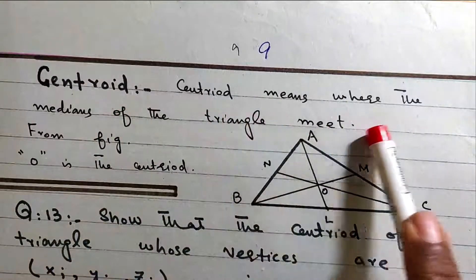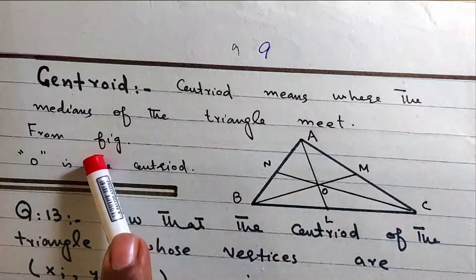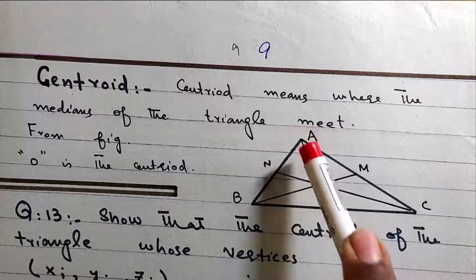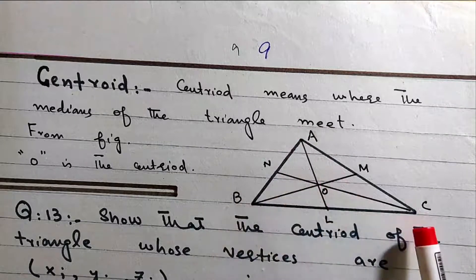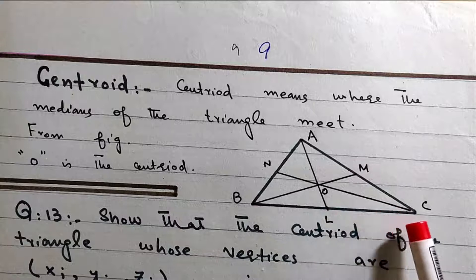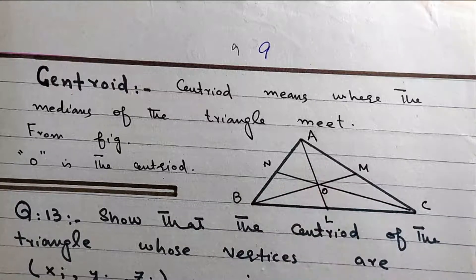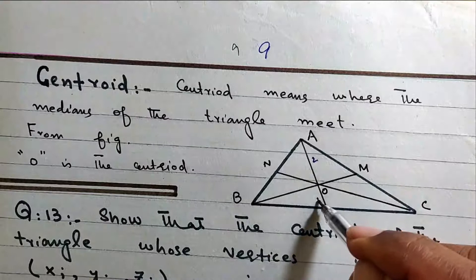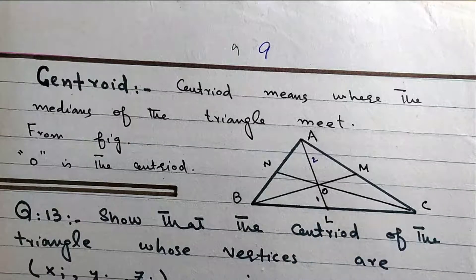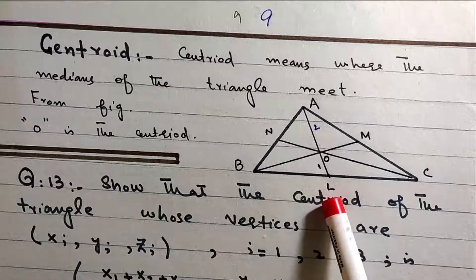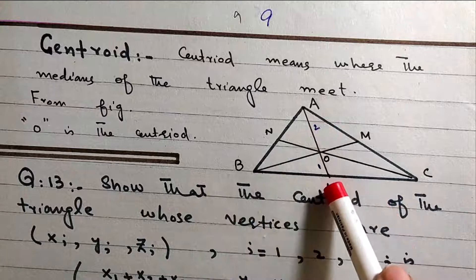Centroid means the point where the medians of the triangle meet. From the figure, O is the centroid. This triangle has three medians — the first median, the second median, and the third median — all meeting at the centroid.